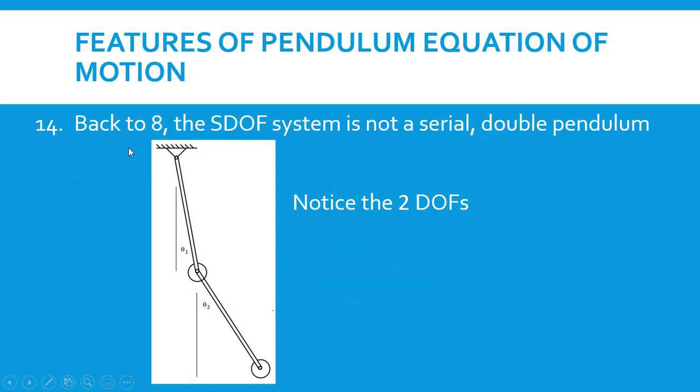Now, back to eight, I mentioned that this was a single degree of freedom system, and this shows a double pendulum. It's actually a serial double pendulum, and what I mean is that the second pendulum pivots about the center of the first pendulum's bob. To know the position of this pendulum, you actually need to know two different displacements: the angular displacement of the top pendulum and the angular displacement of the bottom pendulum. These two thetas are not related to each other, and you need to know two to know the full position of this pendulum. So this is a 2DOF system, a double degree of freedom system or two degree of freedom system.